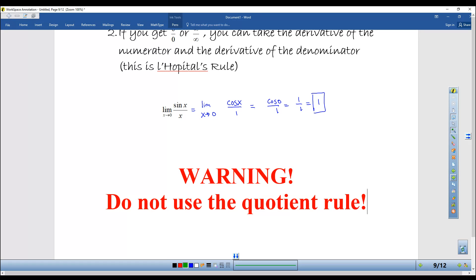And so then I go ahead and plug zero in: cosine of zero over one. Cosine of zero is one, which gives me one over one, which is one. And there you go - the limit as x approaches zero of sine of x over x is equal to one. That's how you apply L'Hopital's rule.